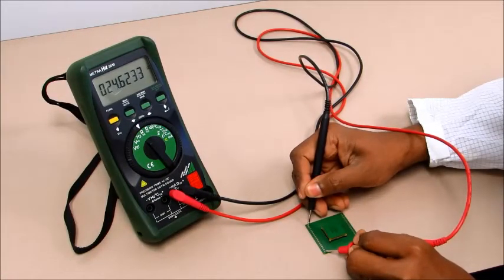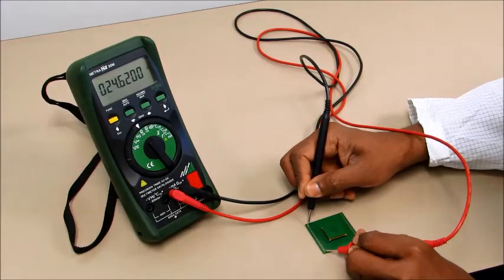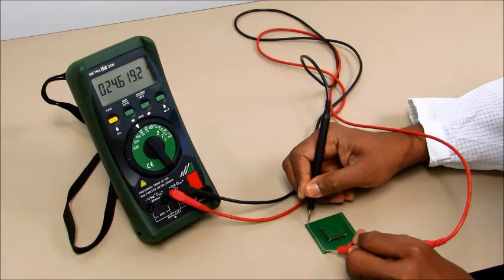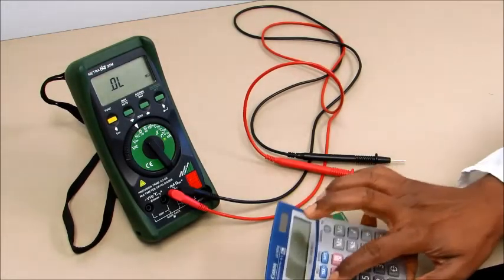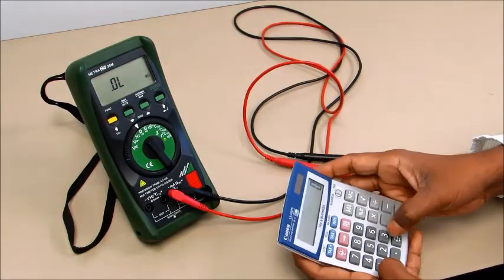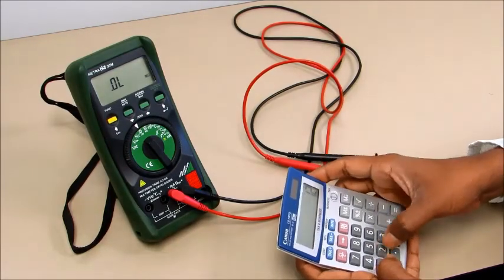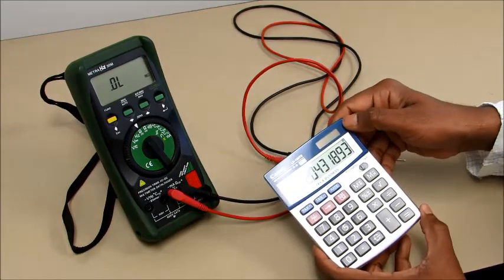When it is verified with this multimeter, it shows 24.6 ohms for the complete 1204 pin. So 24.6 divided by 1204 gives you 20 milliohms per contact.